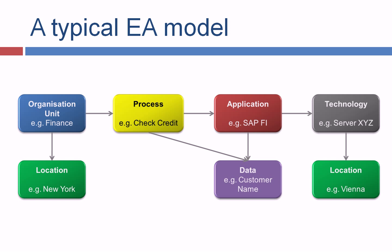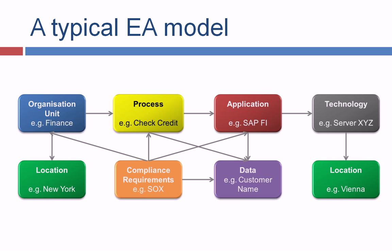These are the kinds of objects important for an enterprise architecture model, though there could be many more — like business goals, KPIs, and critical success factors. You can add whatever your requirements are. Importantly, you need a repository that allows you to extend your metadata for the EA model. Another example is compliance requirements, such as SOX, which have requirements for organization units, processes, applications, and data — for example, the SOX requirement for segregation of duties. It's applicable to all types of information objects.